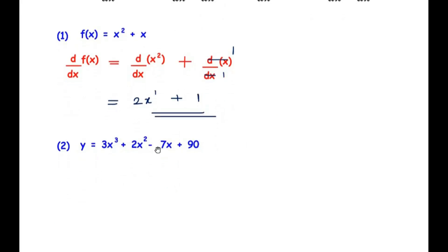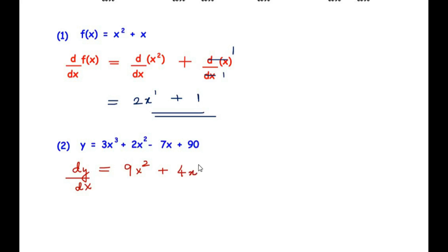Another example: y = 3x³ + 2x² − 7x + 90. Differentiating term by term using the power rule: d/dx of 3x³ gives 9x², d/dx of 2x² gives 4x, d/dx of −7x gives −7, and d/dx of 90 gives 0. So dy/dx = 9x² + 4x − 7.